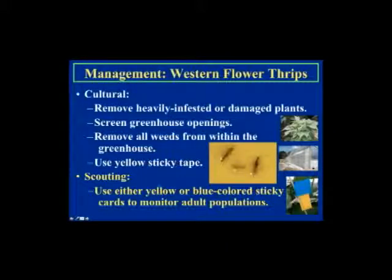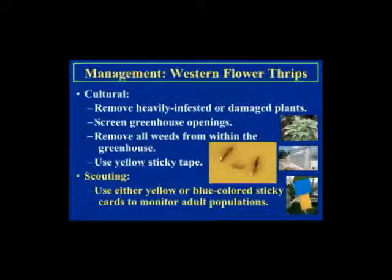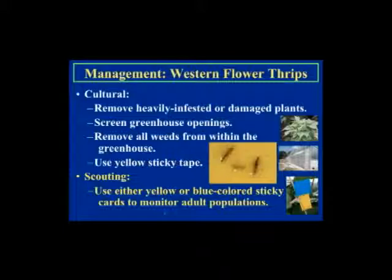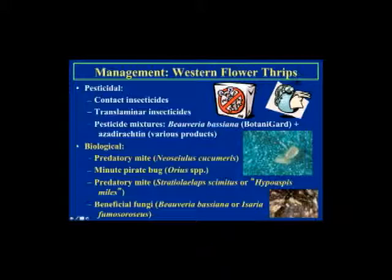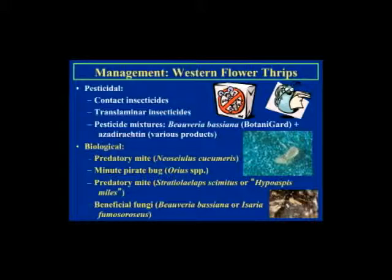Thrips management: remove heavily infested or damaged plants. Screen greenhouse openings if possible. Remove all weeds, which are great sources of thrips. Mass yellow sticky tape can be effective for mass-trapping western flower thrips. For scouting, use yellow or blue sticky cards — yellow is preferred because you can see thrips more easily and also pick up adult whiteflies. A good pesticide mixture is Beauveria bassiana (BotaniGard) combined with an azadirachtin compound, which is very synergistic and effective against western flower thrips on poinsettia and other crops.